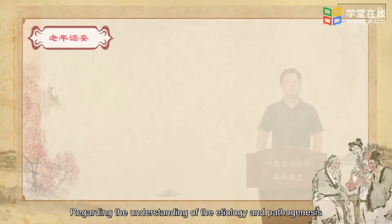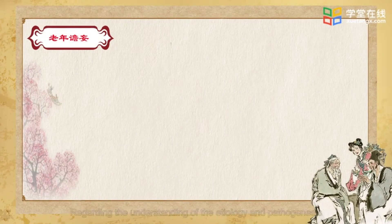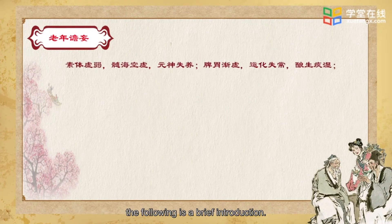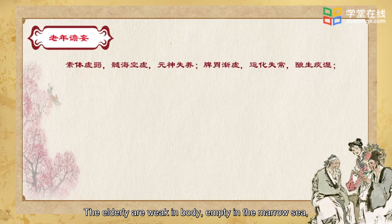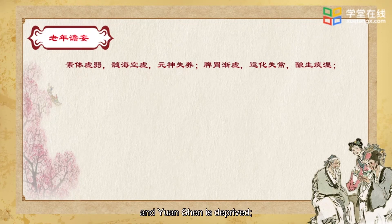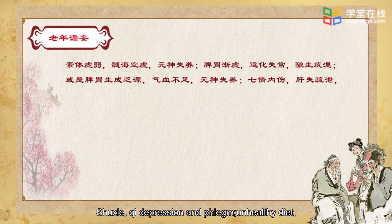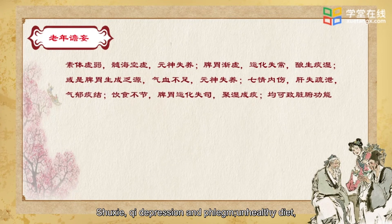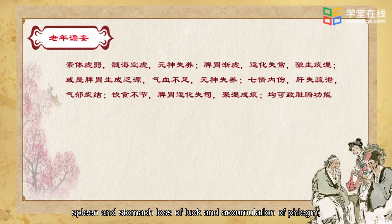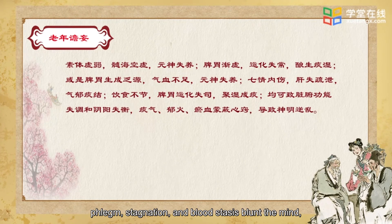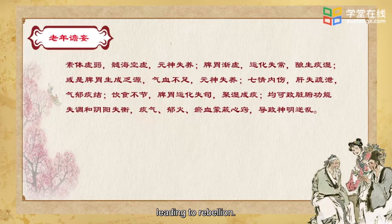Regarding the understanding of the etiology and pathogenesis of delirium in old Chinese medicine, the elderly are weak in body, empty in the marrow sea, and Yuan Shen is deprived. The spleen and stomach are gradually weakened, the luck is abnormal, and phlegm is brewed. Shuxi, qi depression and phlegm, unhealthy diet, spleen and stomach loss of luck and accumulation of phlegm can cause visceral dysfunction and imbalance of yin and yang. Phlegm, stagnation, and blood stasis blunt the mind, leading to rebellion.